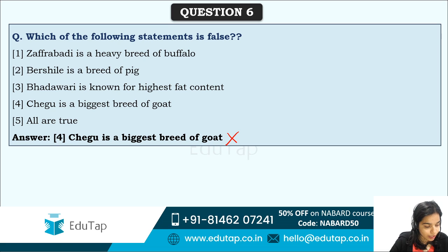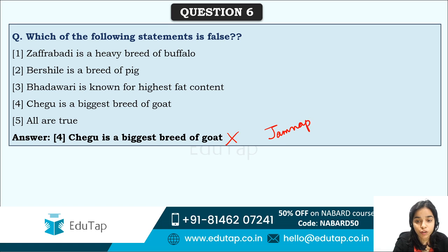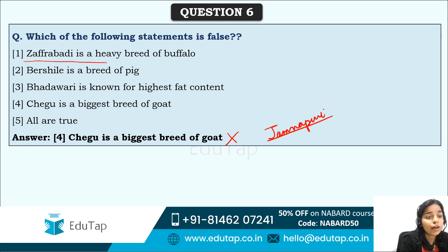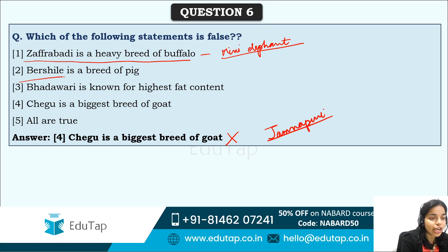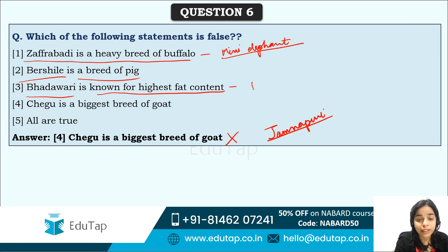The correct answer for the biggest breed of goat is Jamunapari, not Chegu. The true statements are: Jafrabadi is a heavy breed of buffalo and is known as 'mini elephant'; Barshail is a breed of pig; and Bhadavari is a breed of buffalo known for its highest fat content.